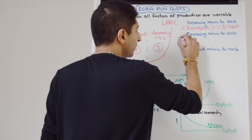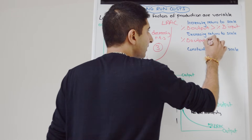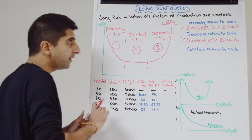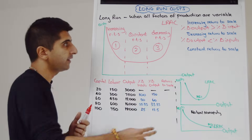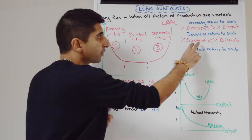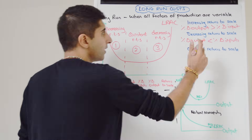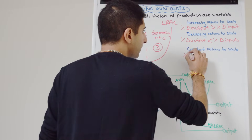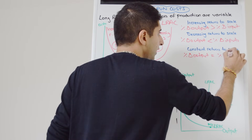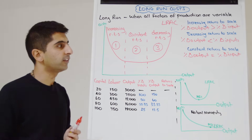Decreasing returns to scale is the opposite — it's when the percentage change in output is less than the percentage change in input. When a business increases their factors of production, costs are rising but they're getting less out in return, so average cost is increasing. Constant returns to scale is when the two are equal — the percentage change in output equals the percentage change in input, and therefore average costs are flat.